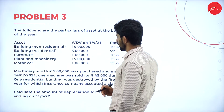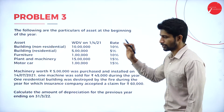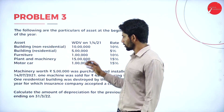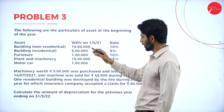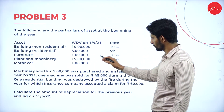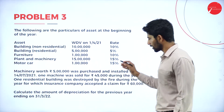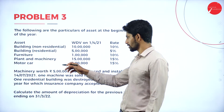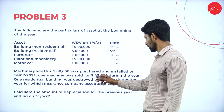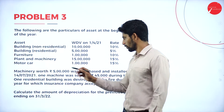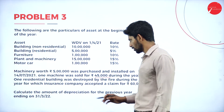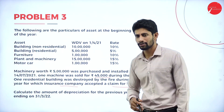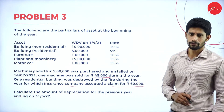Problem number 3: the following are the particulars of assets at the beginning of the year — Building non-residential: Rs. 10 lakhs at 10%; Building residential: Rs. 5 lakhs at 5%; Furniture: Rs. 1 lakh at 10%; Plant and machinery: Rs. 15 lakhs at 15%; Motor car: Rs. 1 lakh at 15%. Machinery worth Rs. 5 lakhs was purchased and installed on 14-7-2021. One machine was sold for Rs. 45,000 during the year.